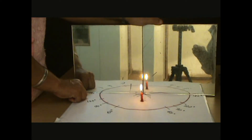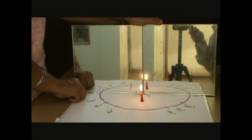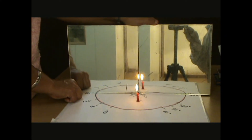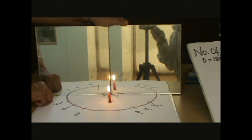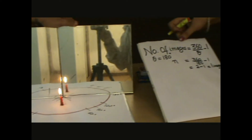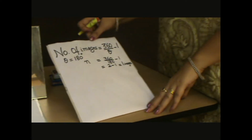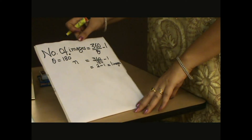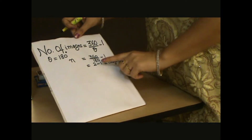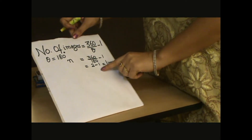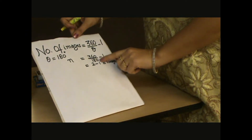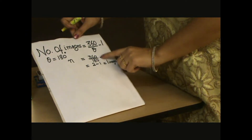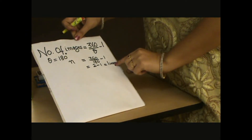The angle between these two mirrors is 180 degrees and the number of images formed is 1. According to the formula, it is 360 divided by 180, that is 2 minus 1, which equals one image.